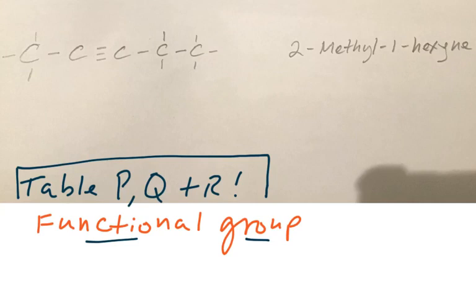So all the guys on table R can be considered functional groups — alkenes, alkynes, alkanes are also functional groups because they have a specific identity which they give to the compound in terms of physical and chemical properties.